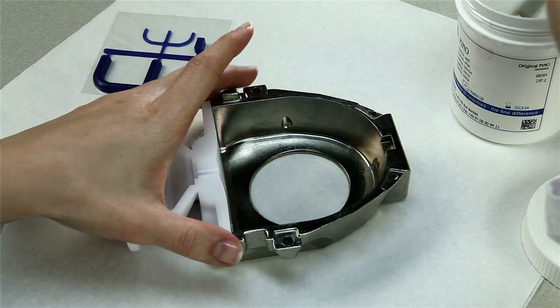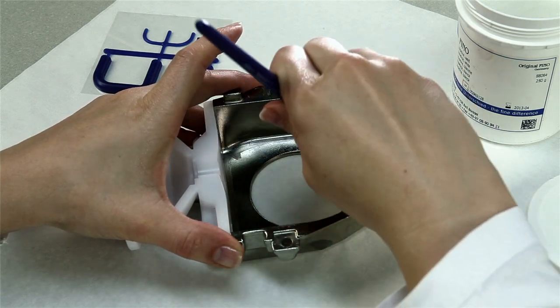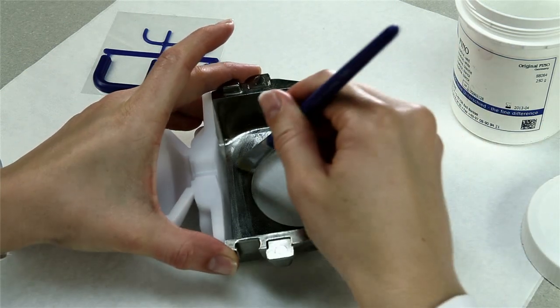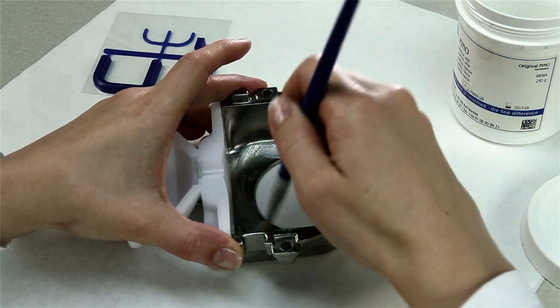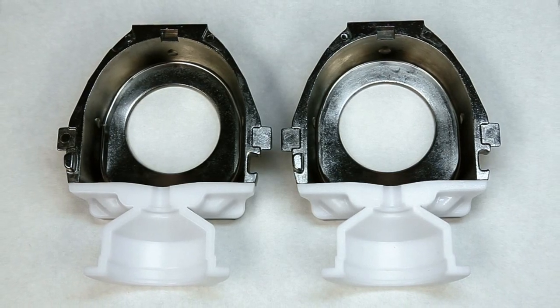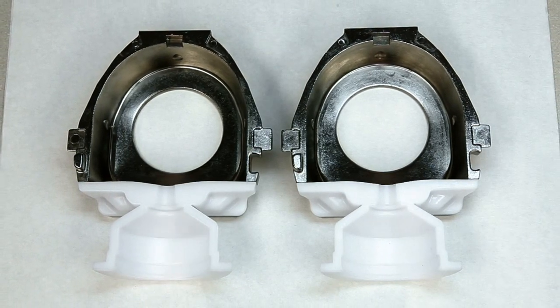To prepare the flask, coat the inner surfaces of the flask halves with a thin layer of petroleum jelly. The two flask halves are identical. Both can be used for model investment and for the counter model.